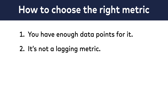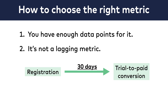The second condition is, your success metric can't be a lagging metric. What is a lagging metric? Here is an example. There are several online products that offer a 30-day trial period before asking for payment. It's pretty common. For these products, the trial-to-paid conversion number, for instance, is a lagging metric.